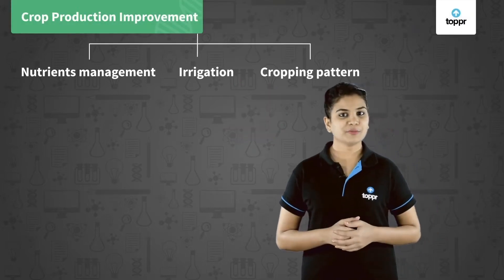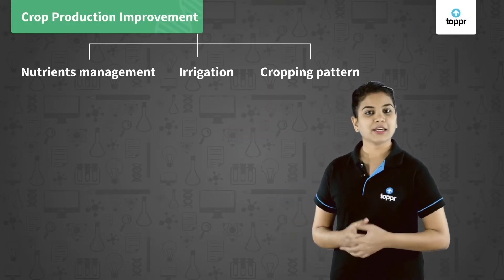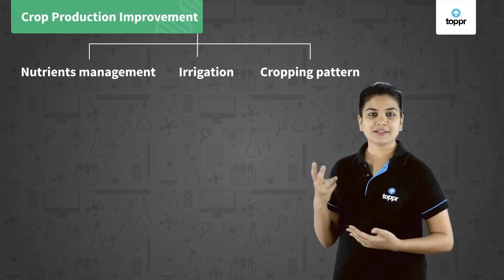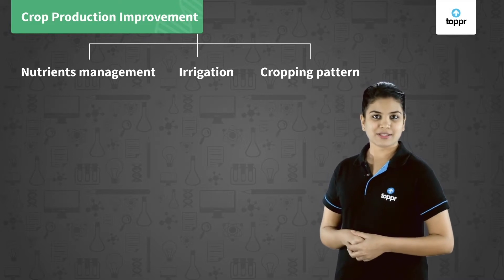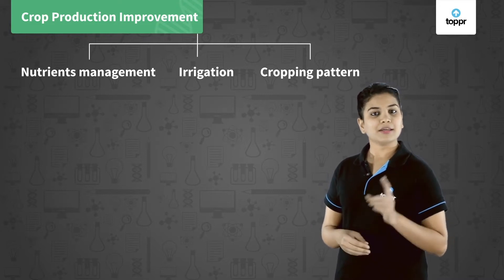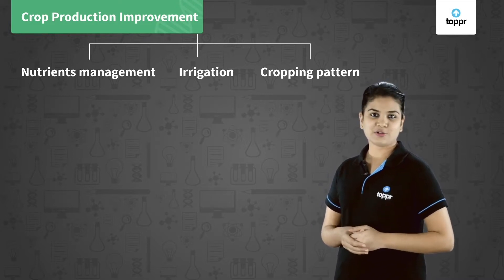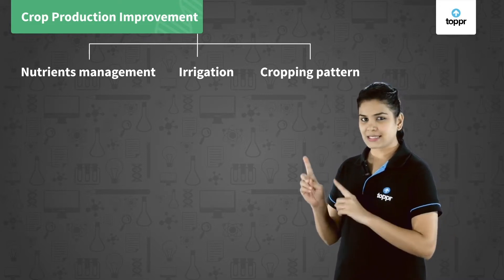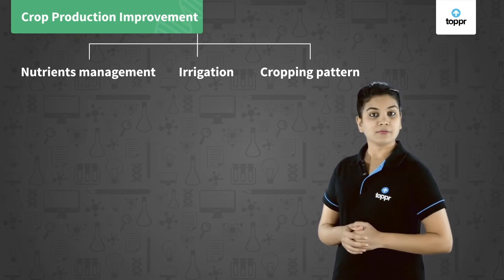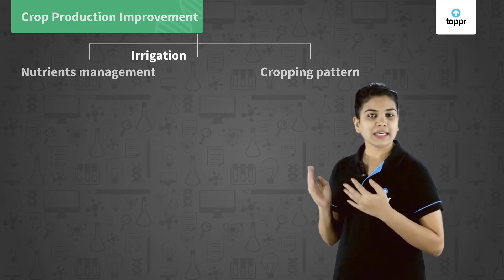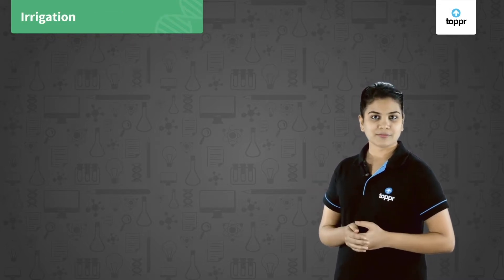Crop production improvement involves three major points. In this lesson we are going to talk about the second one, which is irrigation.